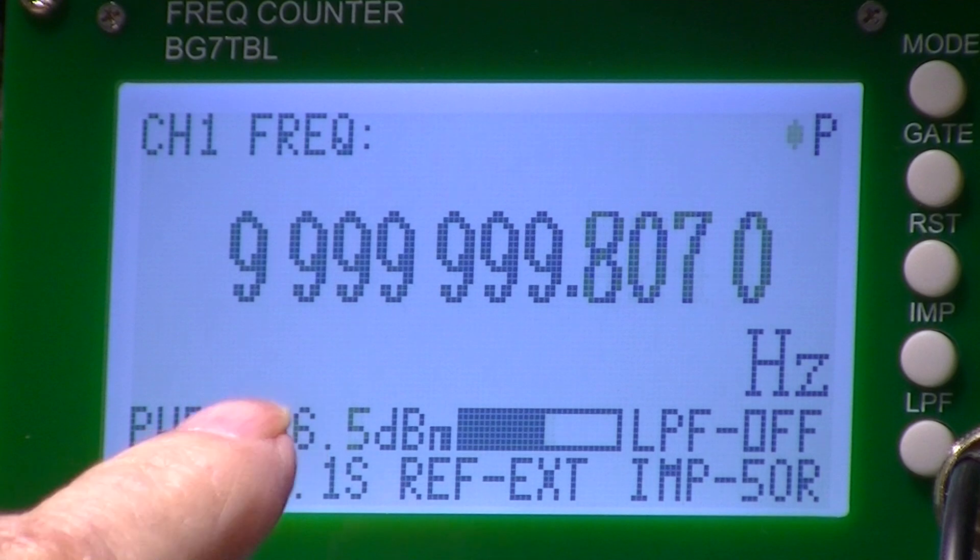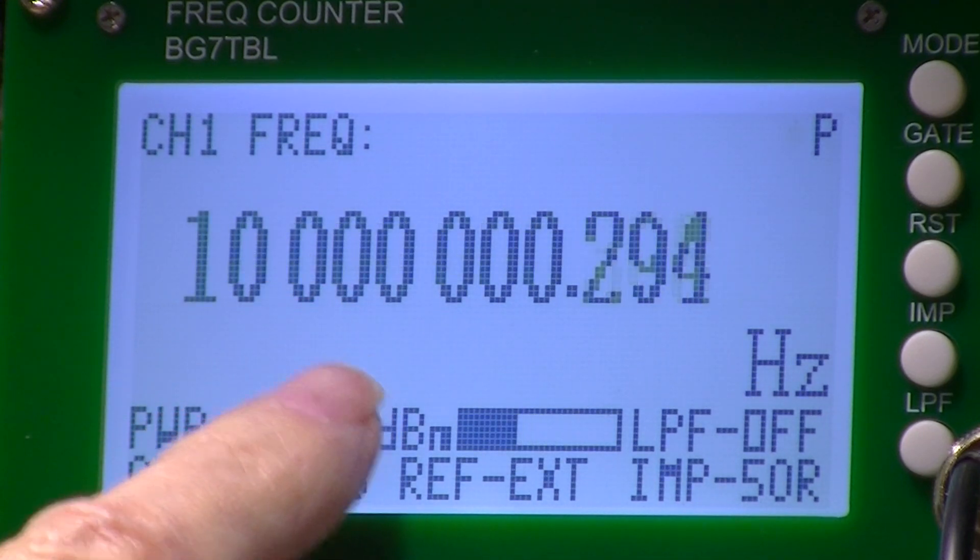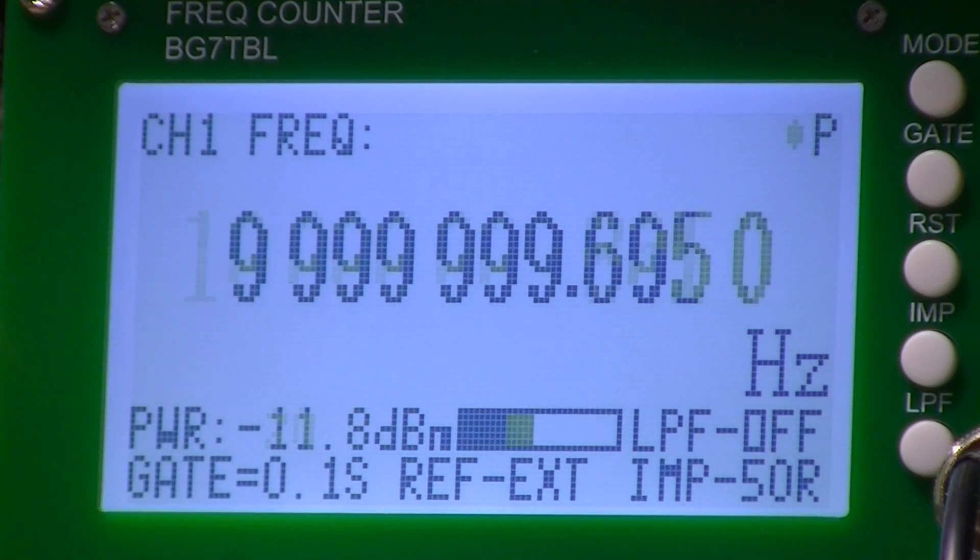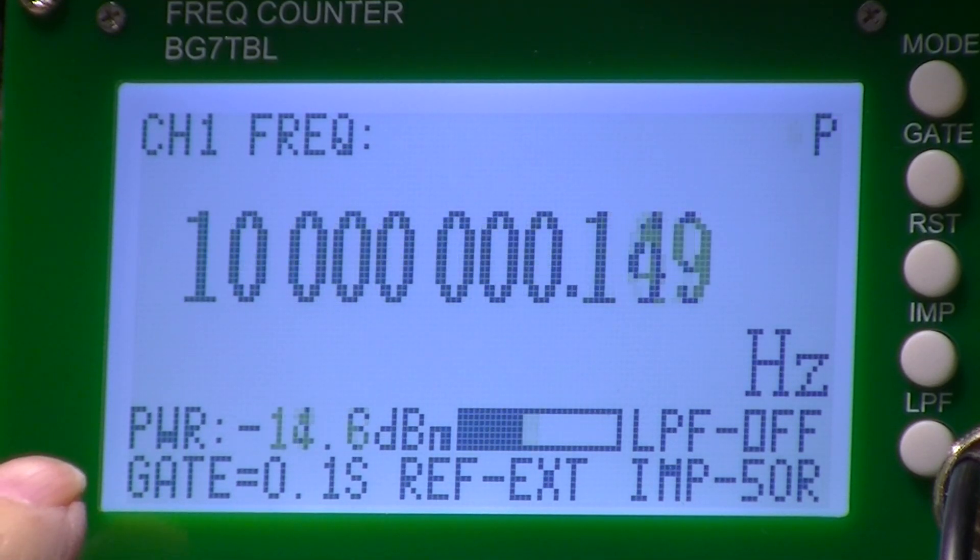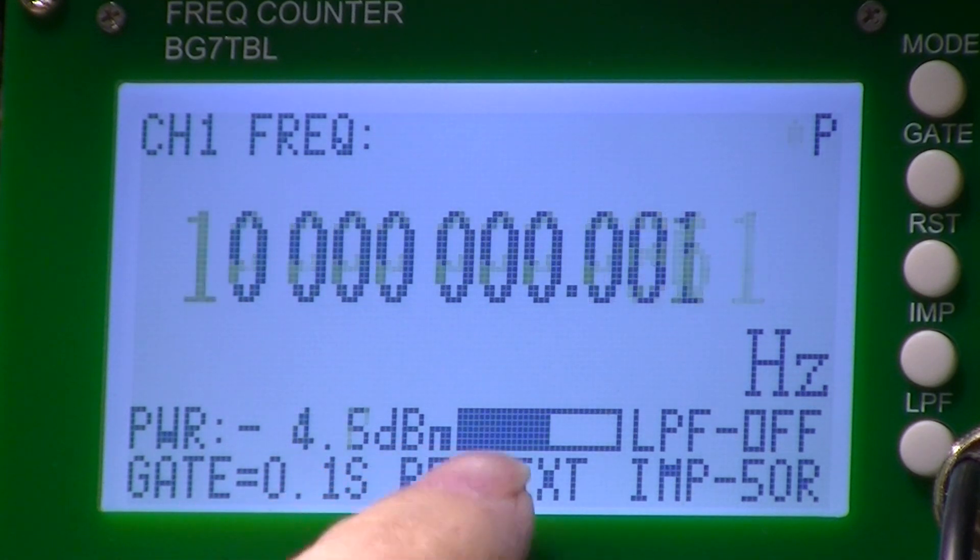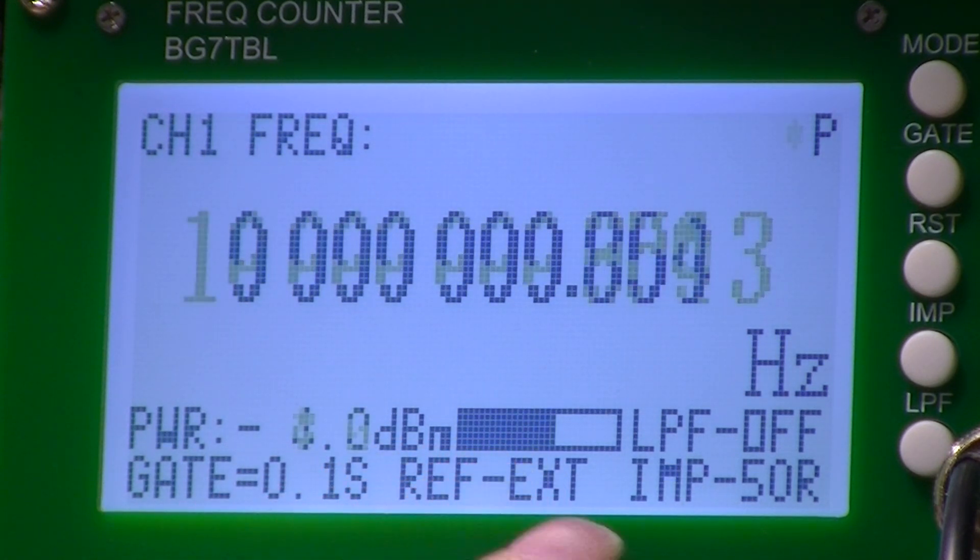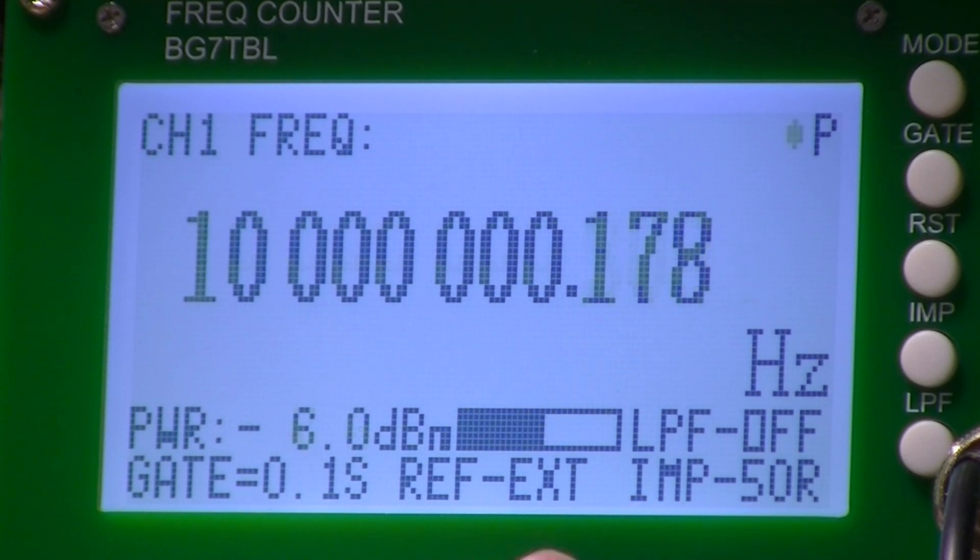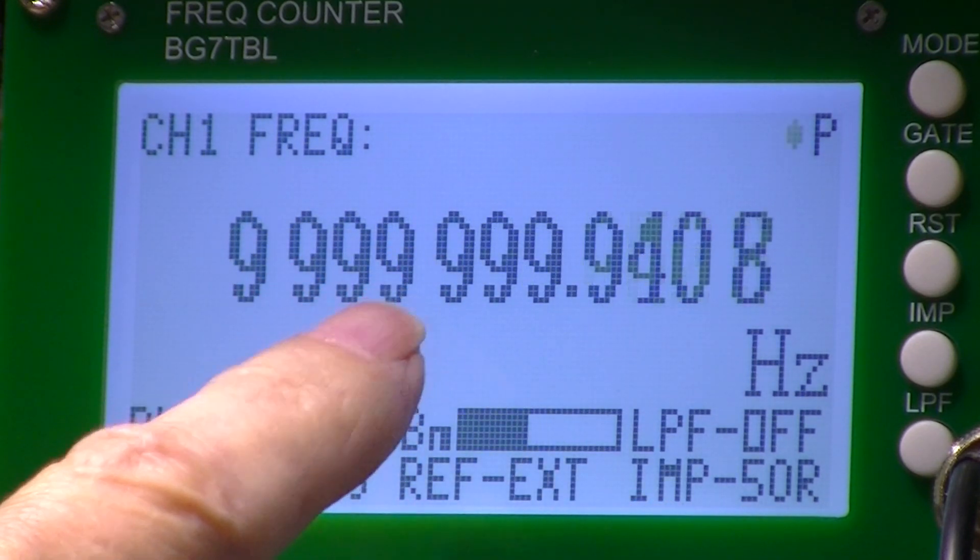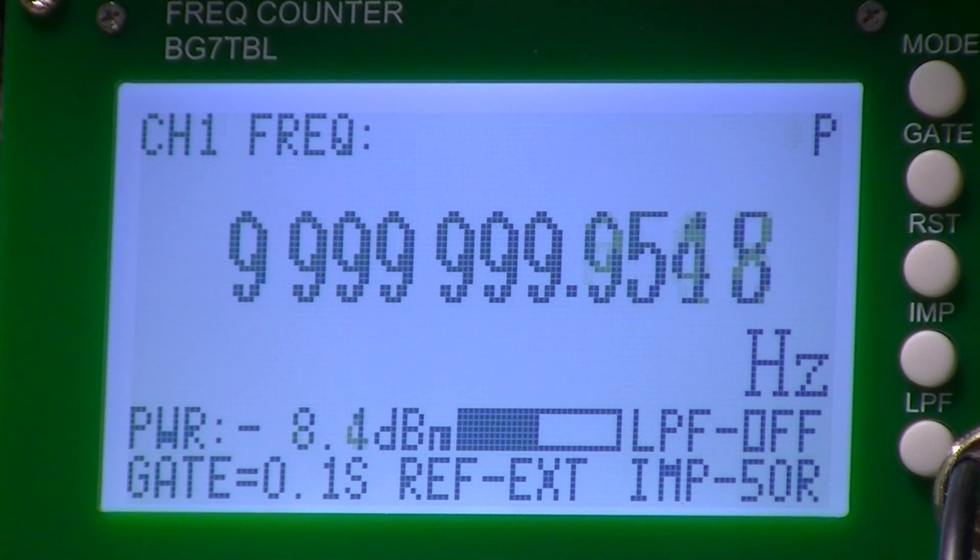Here we see it on the frequency counter. Now this frequency counter is connected to my shop standard. So it's GPS disciplined. You can see the signal strength is varying. The input impedance is 50 ohms. And frequencies for all practical purposes, 10 megahertz.